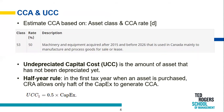To estimate CCA, you can find the asset class and the CCA rate, denoted by the letter D, on the government website. For example, asset class 53 for machinery and equipment to manufacture and process tools for sale or lease has a CCA rate of 50%. Undepreciated Capital Cost, or UCC, is the amount of an asset that has not been depreciated. The CRA allows the half-year rule, which states that in the first tax year when the asset is purchased, only half of the CapEx is able to generate CCA.